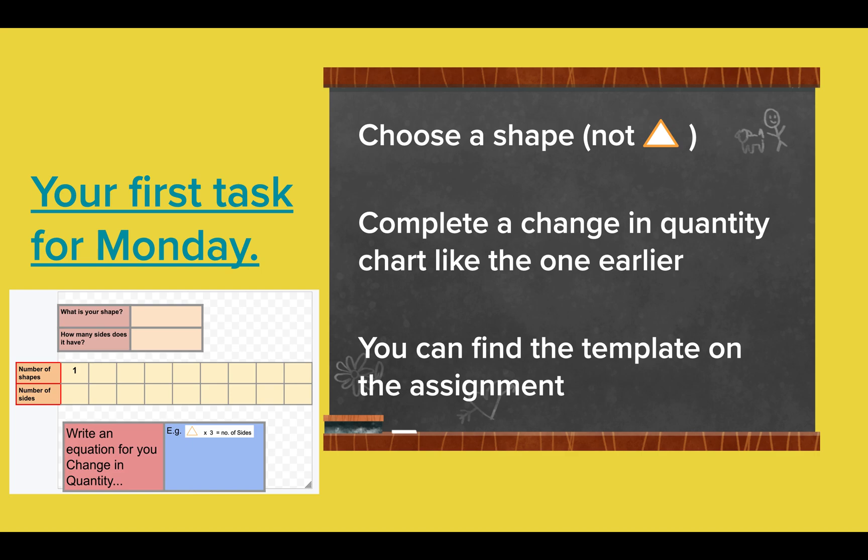Here's your task for today then. You're going to choose a shape. Not a triangle, that would be too easy because you've already learned about triangles. So choose any shape you want apart from a circle. It could be a square, it could be a rectangle, it could be a pentagon, anything you want that has more than one side. And you're going to complete a change in quantity chart like the one earlier. This is a snapshot of the template that you're going to use. And you can find this in the assignment, on the assignment page in the Google Classroom.